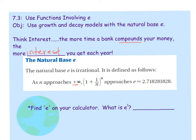If n approaches infinity, this parenthesis approaches a unique value of 2.71828 repeating. That's what e represents.